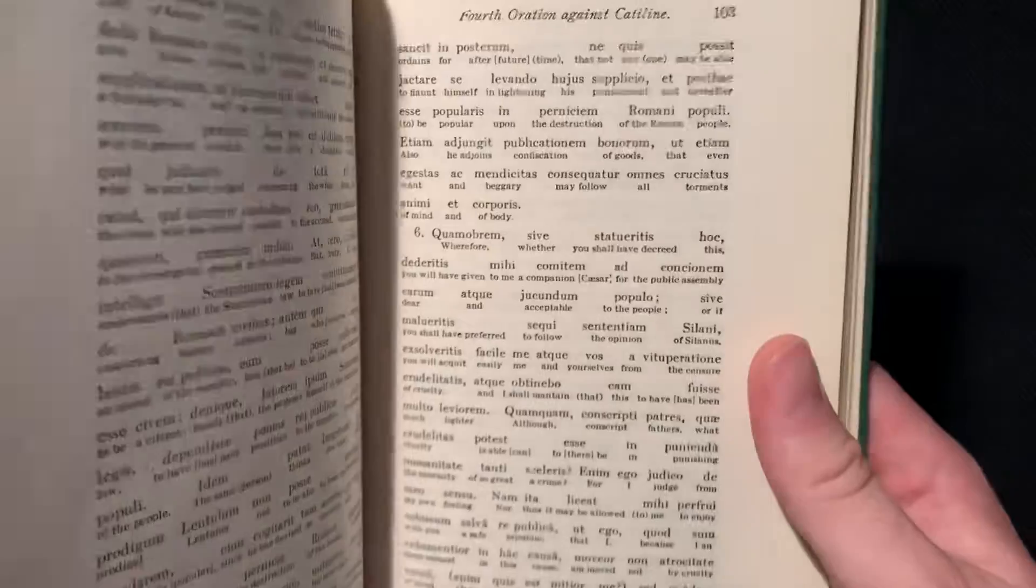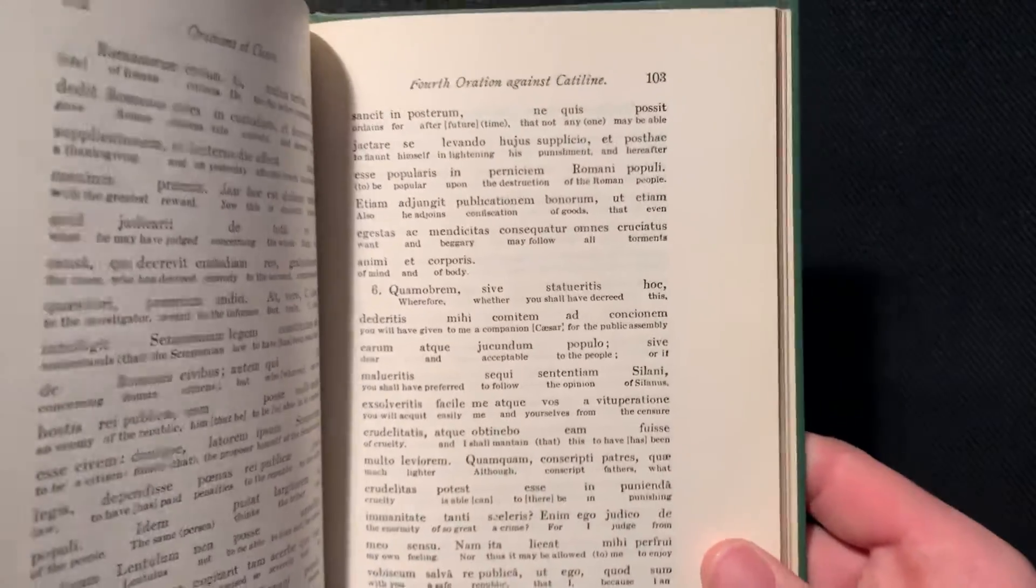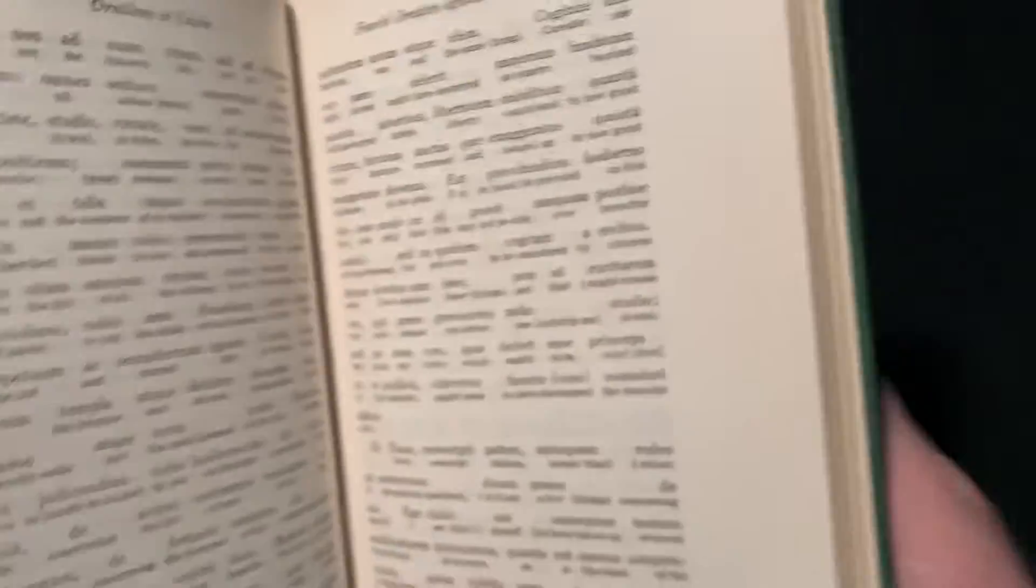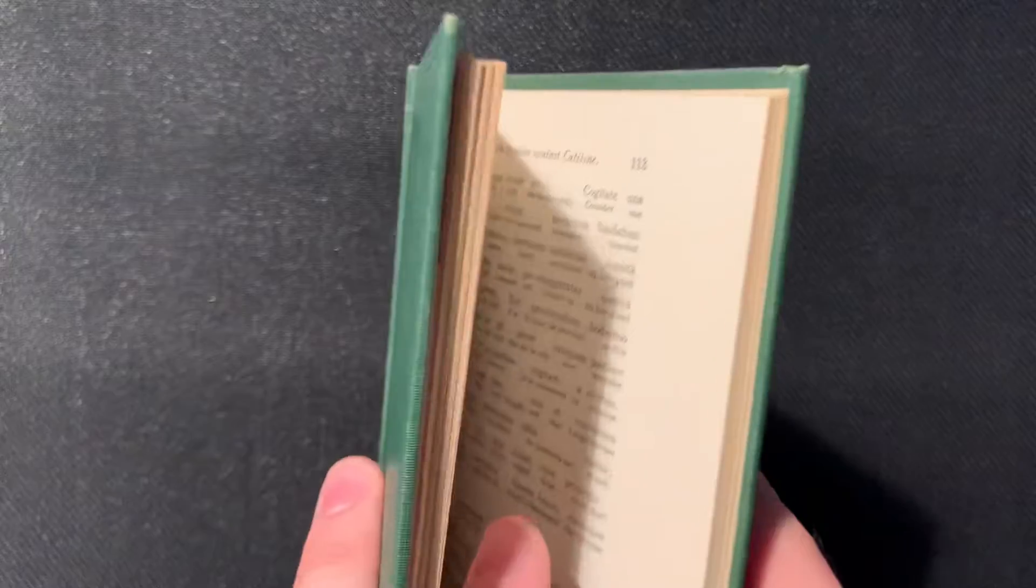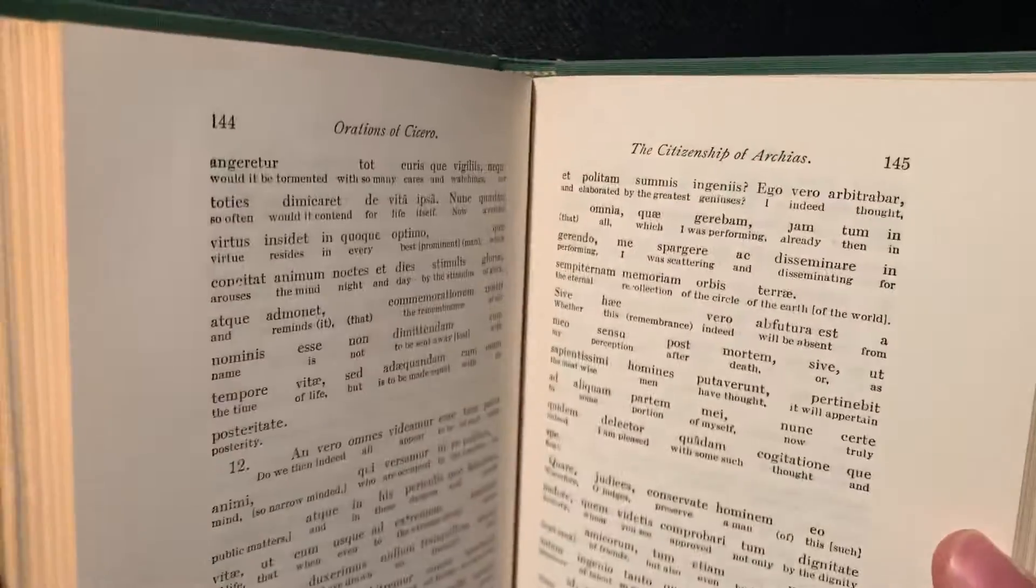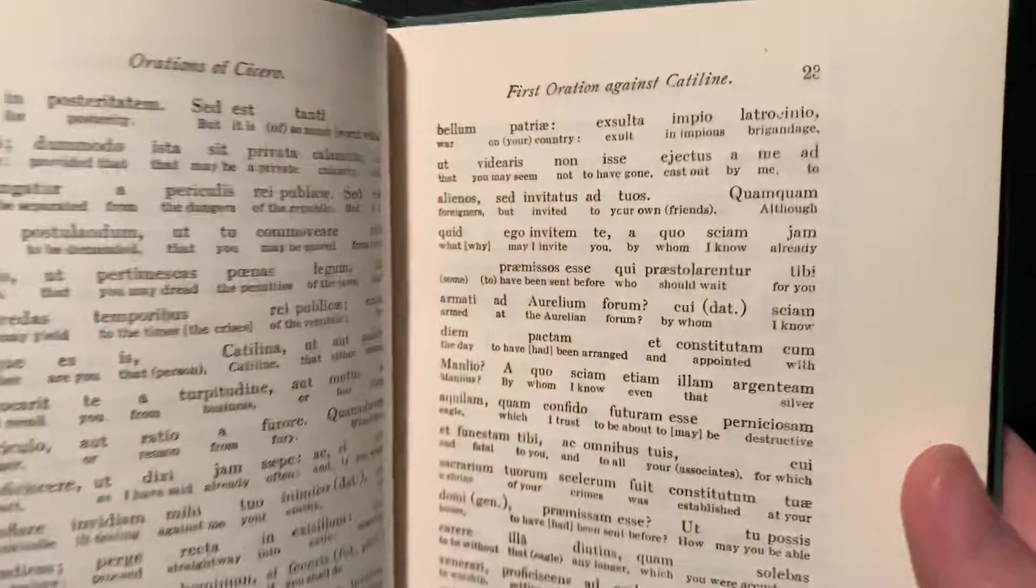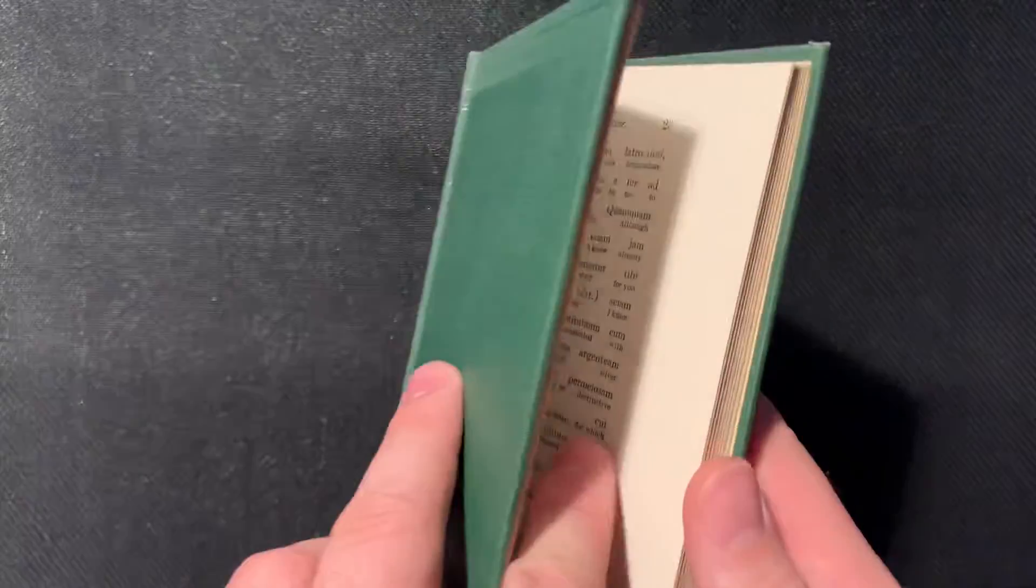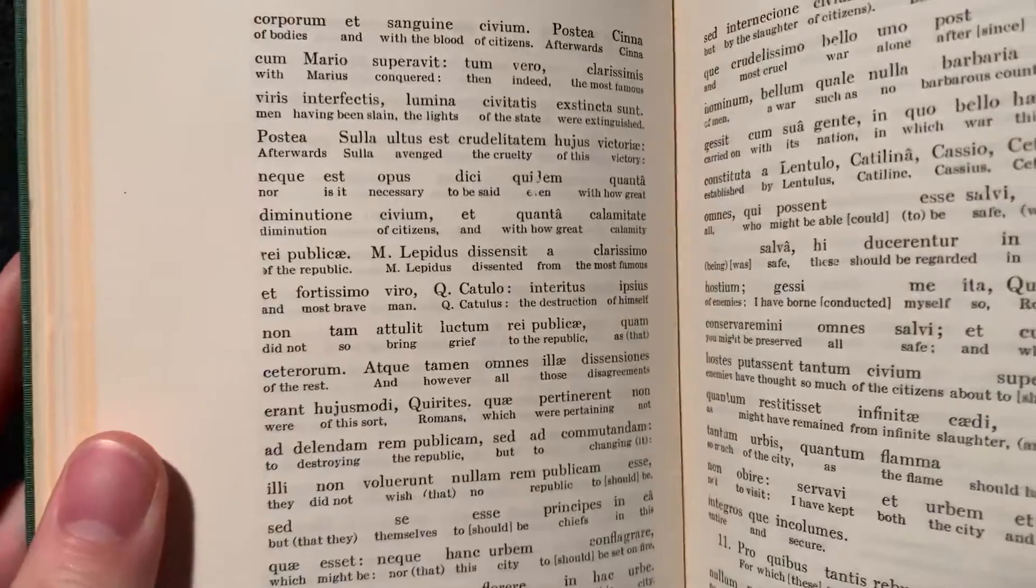But not one that I think has taken off because I haven't seen any modern equivalents of these sorts of things. There's plenty of versions of books where you have both languages, the most famous probably being the Loeb Classical Library series, but these interlinear translations I have never seen them outside of books like this that are usually from the first half of the 20th century.